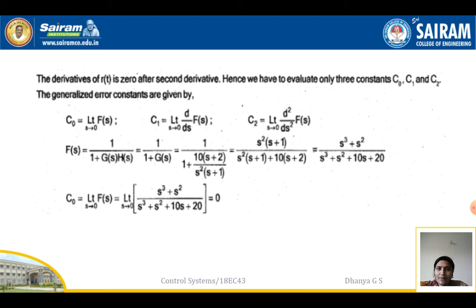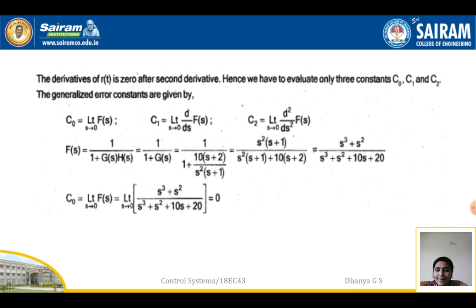Since derivatives of r(t) are zero after the second derivative, only three constants c₀, c₁, and c₂ are needed. The generalized error constants are: c₀ = limit s→0 of f(s), c₁ = limit s→0 of d/ds f(s), c₂ = limit s→0 of d²/ds² f(s), where f(s) = 1/(1+G(s)·H(s)) = (s³+s²)/(s³+s²+10s+20). Applying limit s→0, c₀ = 0.